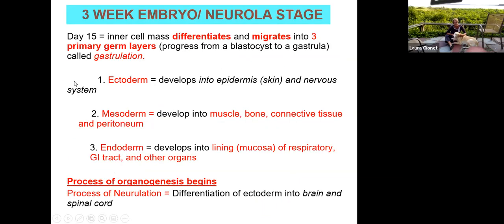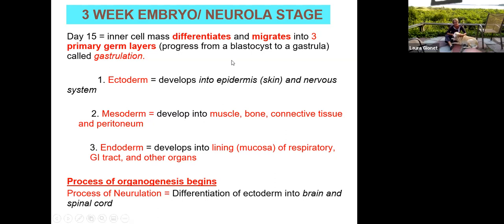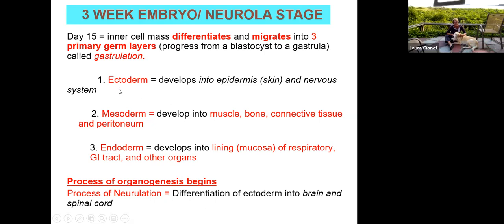We then enter the three-week embryo stage. By about day 15 through day 21, the inner cell mass starts to differentiate also, with cells migrating into three germ layers. This progression from a blastocyst to a gastrula — the three-week embryo — is called gastrulation. So it develops into three germ layers: the ectoderm, the mesoderm, and the endoderm.